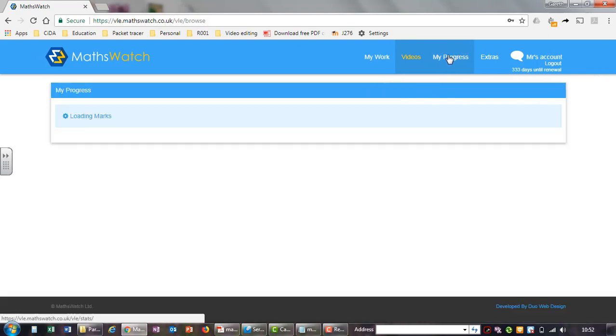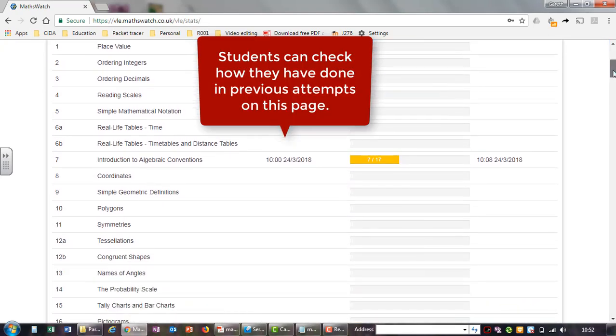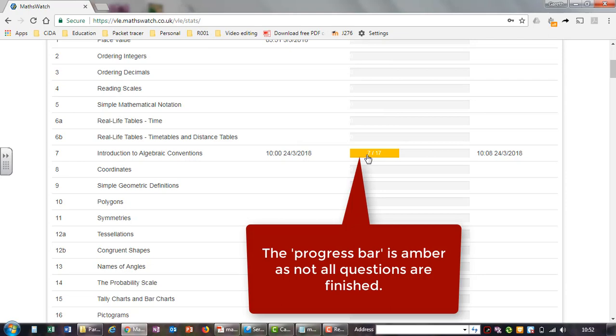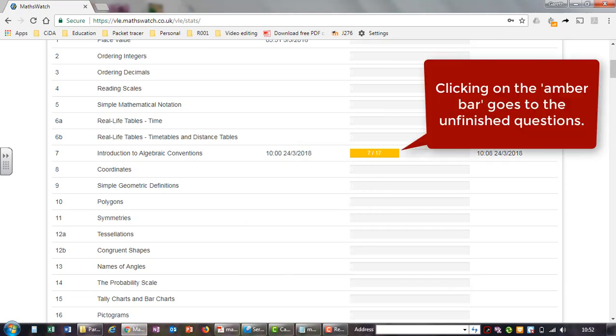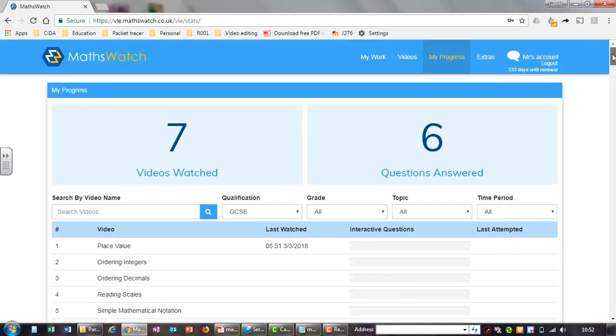Click the My Progress tab. Students can check how they have done in previous attempts on this page. The progress bar is amber as not all the questions are finished. Clicking on the amber bar goes to the unfinished questions.